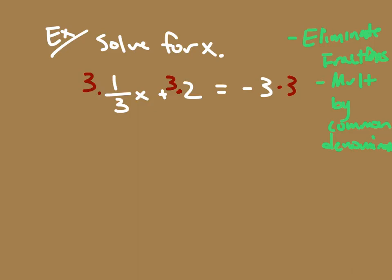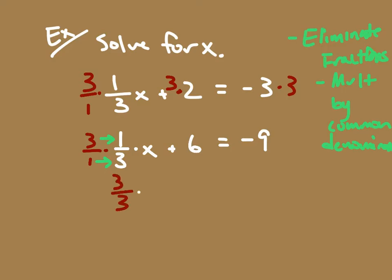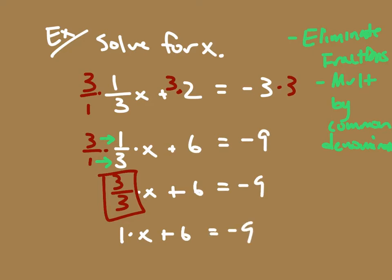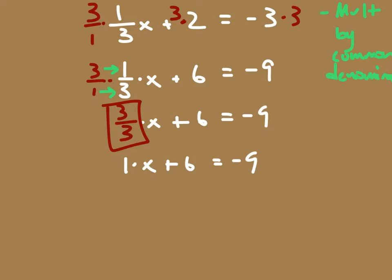Since we only have one denominator here and all the other ones are one, I want to multiply each term of this equation by the common denominator of three. I've got three over one times one over three times x, plus three times two is six, and negative three times three gives us negative nine. Three times one over one times three gives me three over three times x plus six equals negative nine. Three divided by three is simply one, so I have one times x plus six equals negative nine.